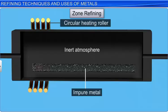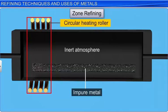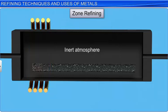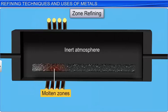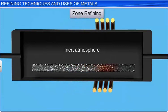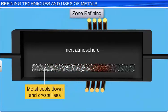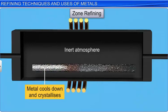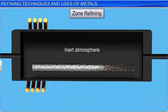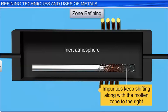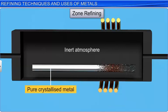In this technique, a movable circular heating roller is fixed at one end of a rod of impure metal. The metal melts in zones called molten zones as the roller moves towards the other end of the rod. When the heating roller shifts forward, the metal to the left cools down and crystallizes while the impurities dissolve in the molten zone. In this way, the impurities keep shifting along with the molten zone to the right and pure crystallized metal is obtained on the left. The process is repeated several times till the impurities are completely removed.